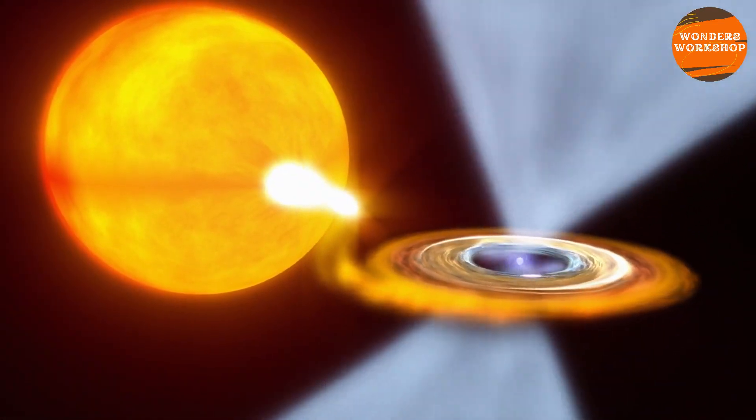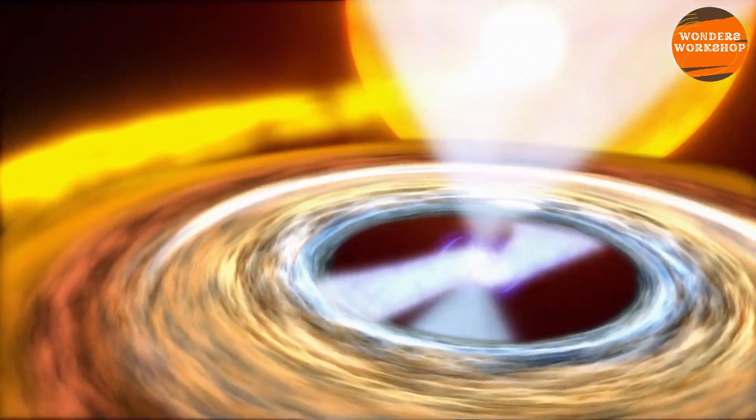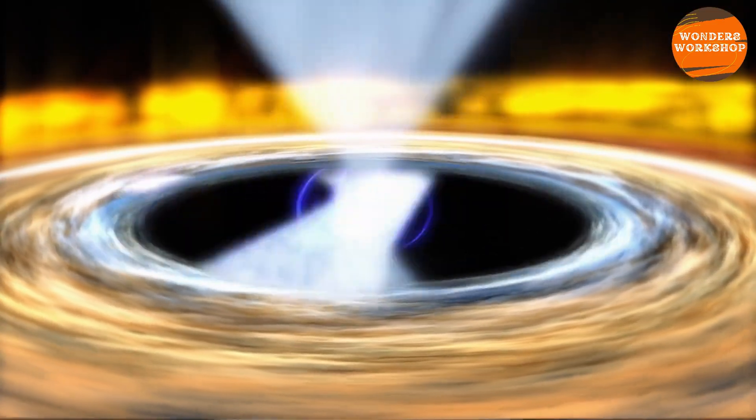After the explosion, in most cases, a compact object remains, such as a neutron star or a black hole, along with the expelled material that may not permanently move away from the explosion site.